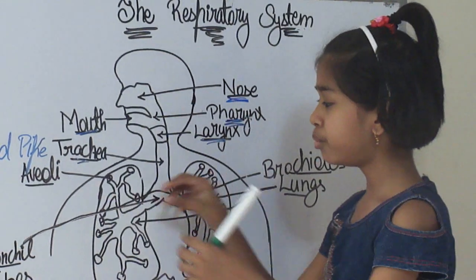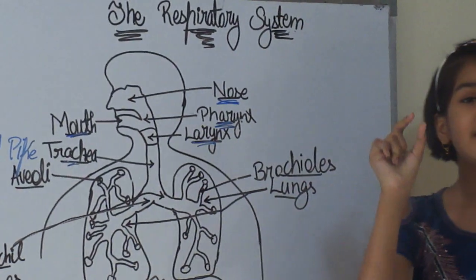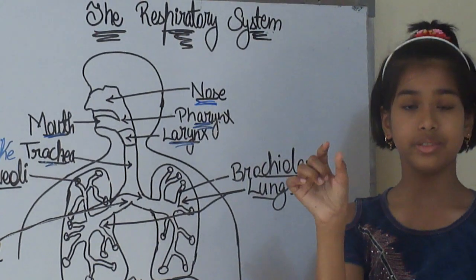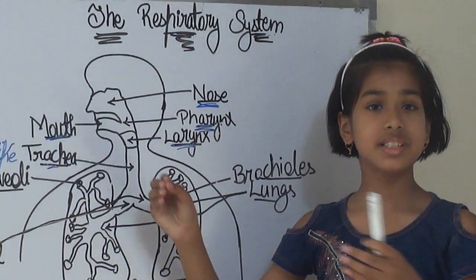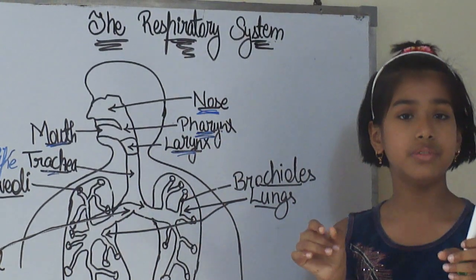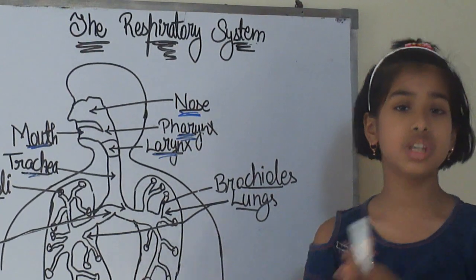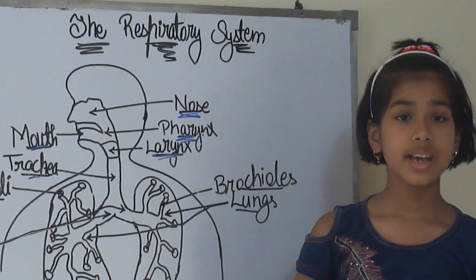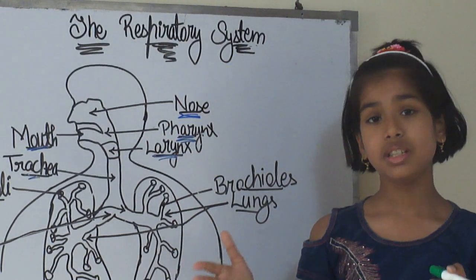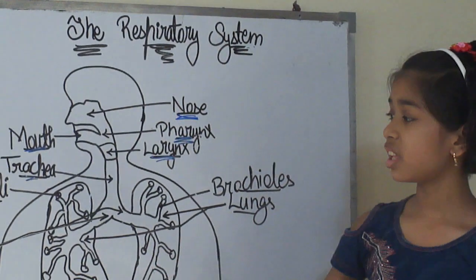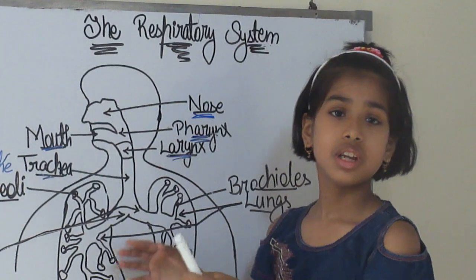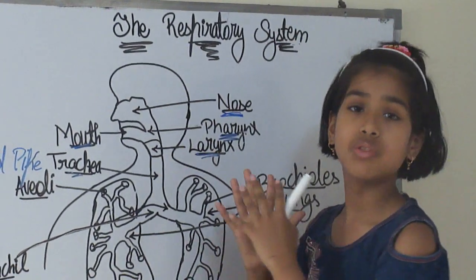Then, the bronchioles end with an air sac-like structure called alveoli. What does this alveoli have? It has blood vessels. And it is responsible for the exchange of carbon dioxide and oxygen. And it transports the oxygen throughout our body.